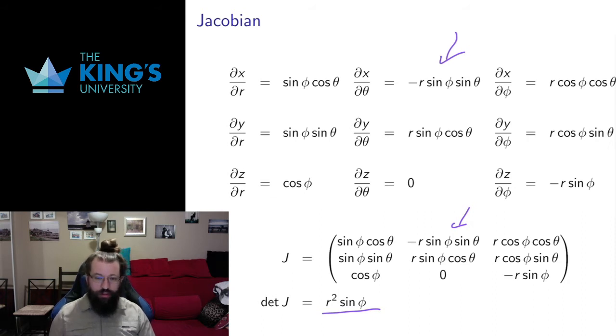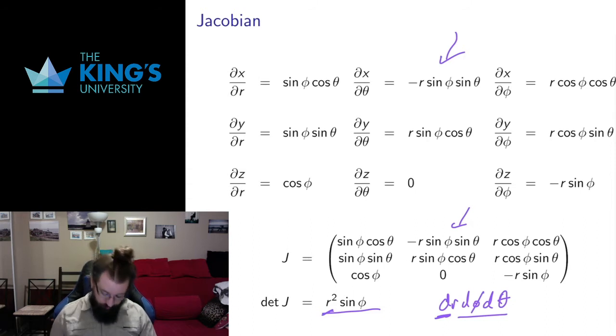Notice this Jacobian has units of length squared. That makes sense because our differential is going to be dr, d phi, d theta. It has two angles in it, so it only has a unit of length. So having two more units of length means we're actually going to get units of length cubed for a little differential piece of volume, which is good. So the fact that I have units of length squared in the Jacobian corrects for the fact that I have two angles in the infinitesimals.